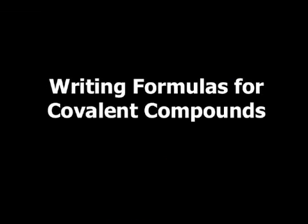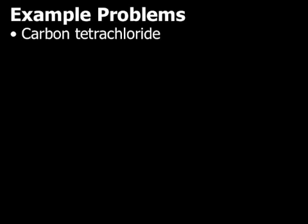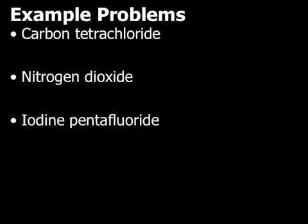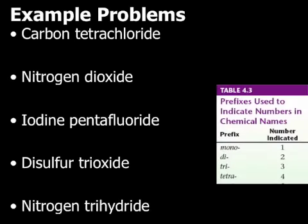When you are looking at writing the formulas, this time there's no crisscrossing like there is for ionic compounds. So here, this is probably the easiest of all the naming stuff that we do. All we have to do is decode the prefixes. So when we're writing the formulas, we just use the prefixes in our name to tell us how many of each element is present.